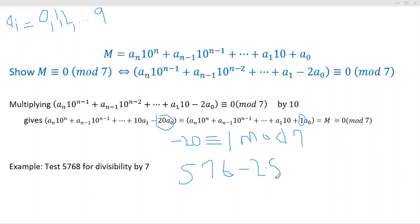Well, 576 minus two times eight is 576 minus 16. That's equal to 560. But 560 is certainly divisible by seven because it's seven times 80. So 560 equals seven times 80.